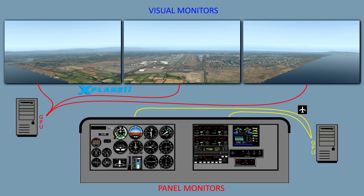Things were well once again in my sim kingdom, except I noticed I kind of missed those pop-out windows from X-Plane. The G530 was nice, but now they had a G1000 for both screens. So all I needed was another copy of X-Plane to run on the second computer. Of course, that computer wasn't quite strong enough, so I decided to get a new computer for the visuals and take the visual computer and make it my panel computer.